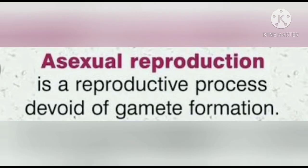Asexual Reproduction — 'A' stands for absence of sexual gametes. So Asexual Reproduction is a process which does not involve gametes. An organism will directly give rise to another living organism without the involvement of gametes. If one organism produces another living organism without gametes, that type of reproduction is called Asexual Reproduction.